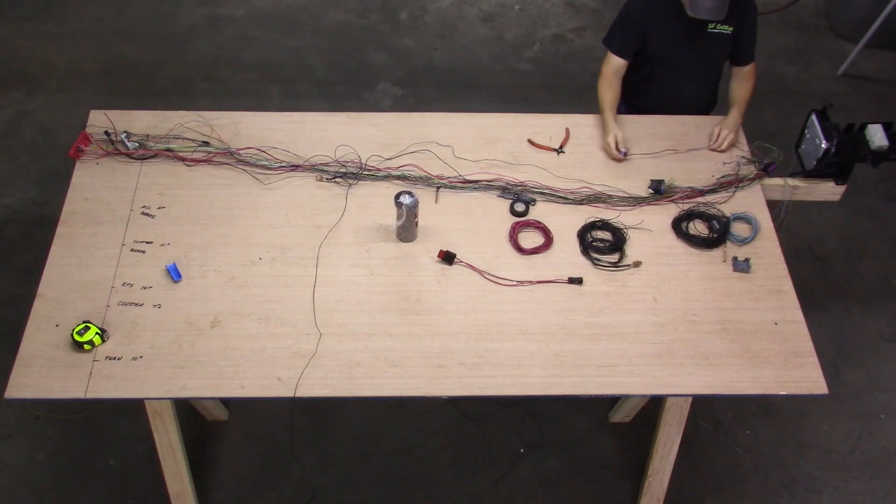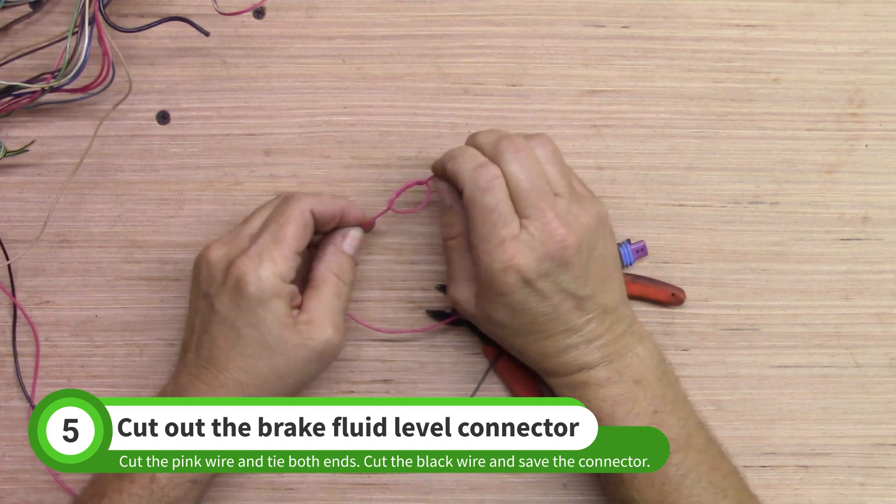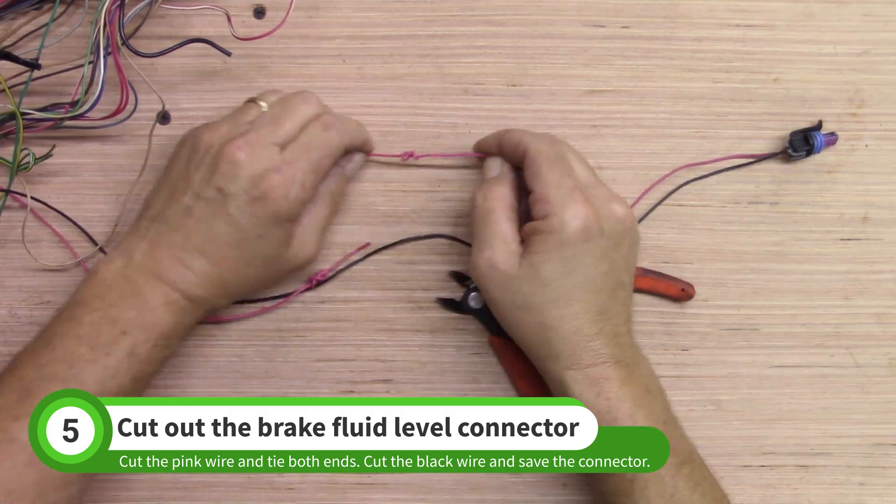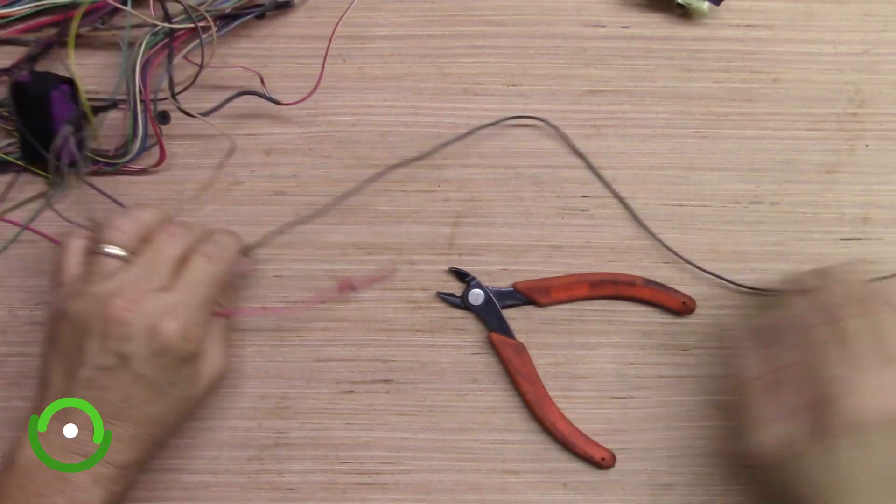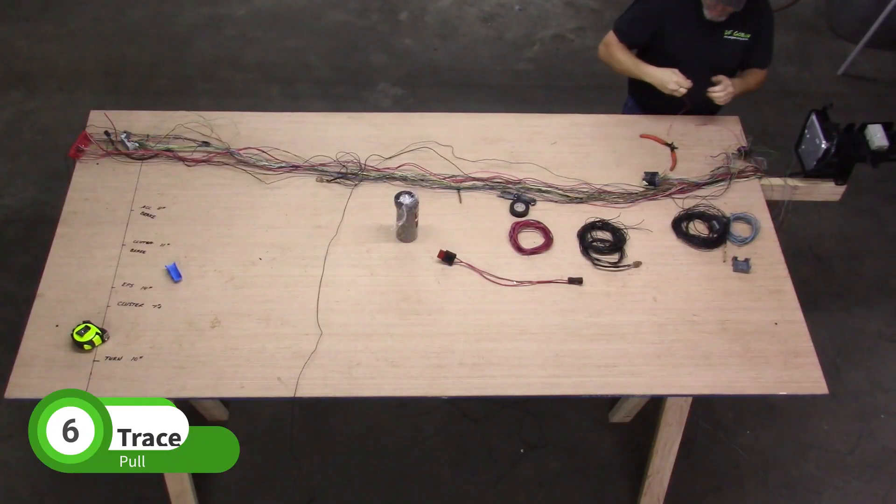The brake fluid reservoir will be closer to the BCM in the Goblin than it was in the Cobalt. This means the pink reservoir wire will be shortened. For now, just cut the wire and tie both ends into a knot. Pull about 2 feet of the black wire and cut it as shown. Save the brake fluid reservoir connector for later.